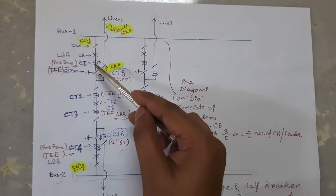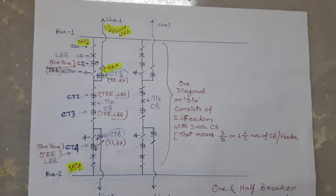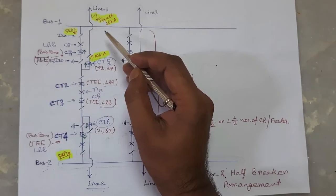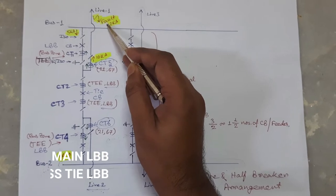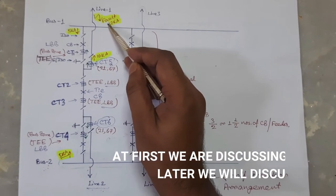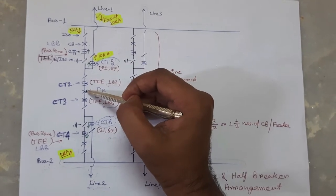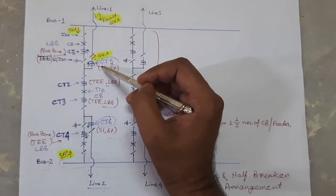there should be tripping of two circuit breakers simultaneously to clear that fault. When a fault occurs in any line, distance protection will detect that fault instantaneously and send trip command to both of these two circuit breakers. At the same time,